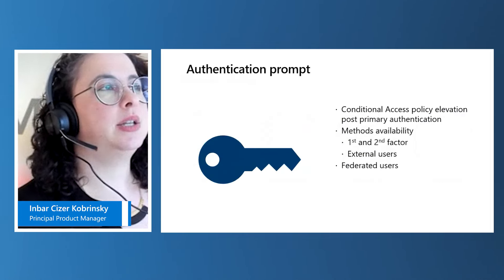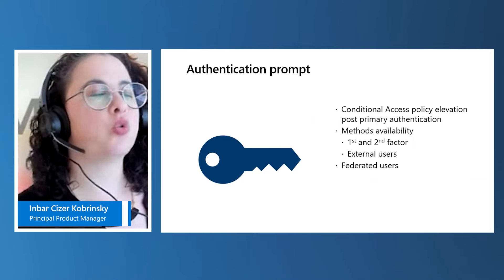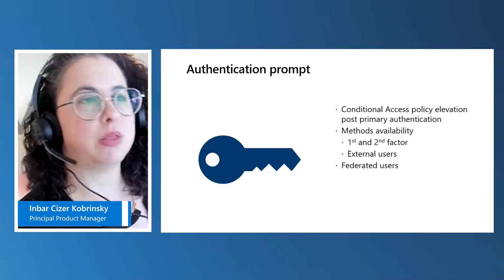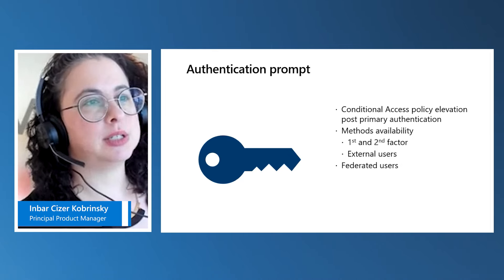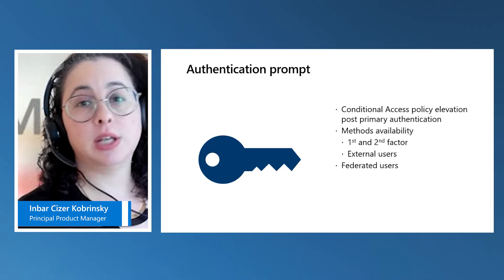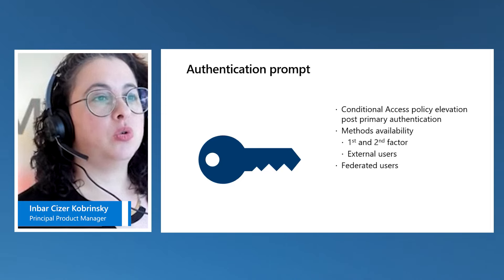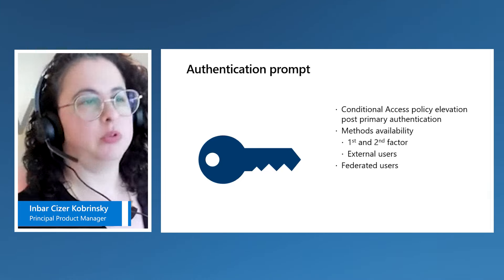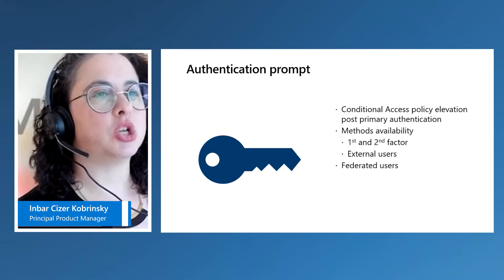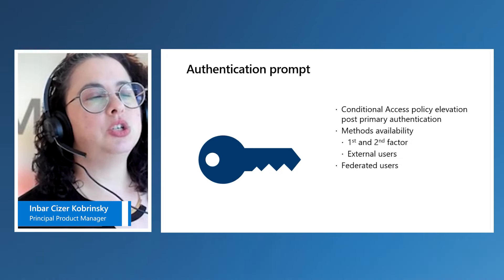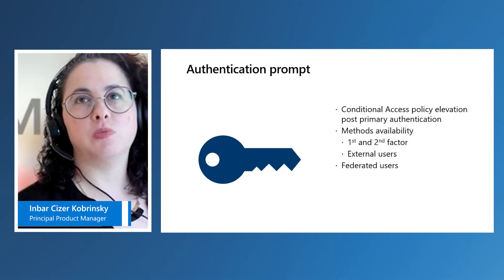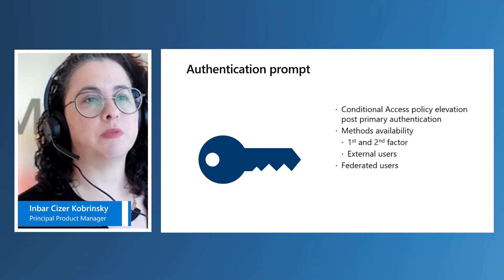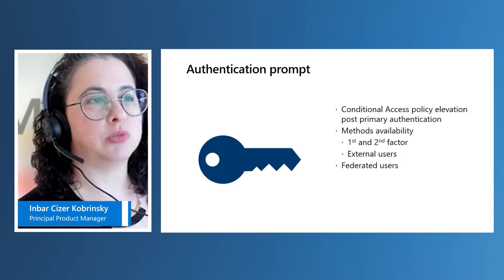Let's start with the simple case of a user who is allowed to use the method. It is required by the authentication method policy and authentication strength policy, and the user has registered a method but hasn't used it in the session before. What happens is that we will prompt the user and require, for example, FIDO2 authentication. Conditional access is evaluated post-primary authentication — once the user has done the first authentication, we run conditional access and prompt them for the relevant authentication methods.